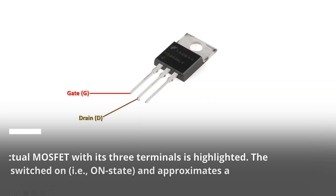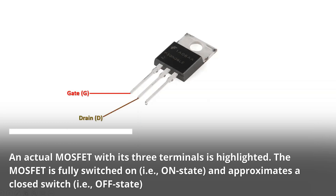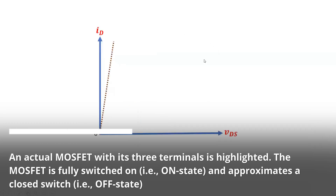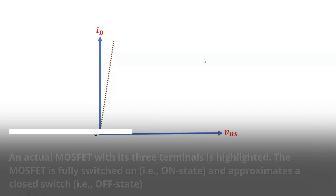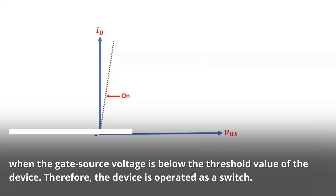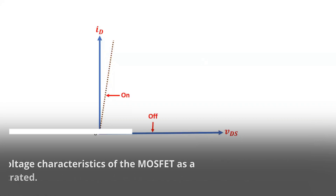An actual MOSFET with its three terminals is highlighted. The MOSFET is fully switched on, i.e. on state, and approximates a closed switch. It approximates an open switch, i.e. off state, when the gate-source voltage is below the threshold value of the device. Therefore, the device is operated as a switch.